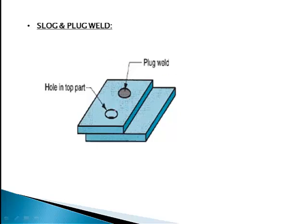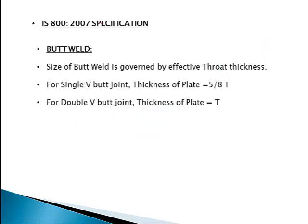Slot weld: whenever we have to connect two plates, especially used for a lap joint, we make a hole in both the plates and fill the hole with welding material. This is one type of welding. Mainly in your exams, butt weld and fillet weld are widely asked, so I will only focus on the numerical and the design process in this lecture.